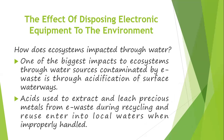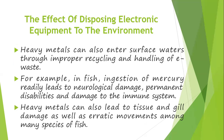One of the biggest impacts on the ecosystem through water sources contaminated by e-waste is through the acidification of surface water. Acids used to extract precious metals from e-waste during recycling will enter local waters when improperly handled. Heavy metals can also enter surface waters through improper recycling. For example, ingestion of mercury and lead in fish leads to neurological damage, developmental disabilities, and damage to the immune system, as well as tissue and blood damage and erratic movements among many species of fish.